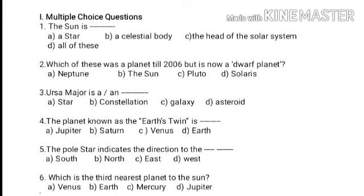Next: the pole star indicates the direction of the — first option, south; second option, north; third option, east; fourth option, west. Which is the correct answer? North is the correct answer.